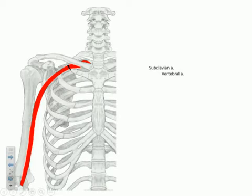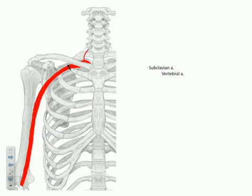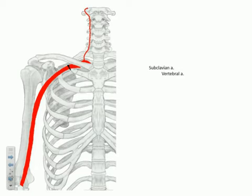The first one is the vertebral artery, and this is actually the branch point at which it comes off — it's one of the first branches off the subclavian. As we've previously discussed, it's going to run medially through the foramen transversarium of cervical vertebrae C1 through C6 as it continues on its way to the base of the occiput. So we've seen the distal segment of this artery, and this gives us an opportunity to draw in the proximal segment as well.